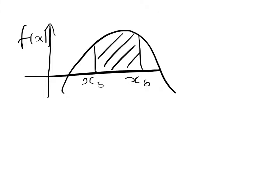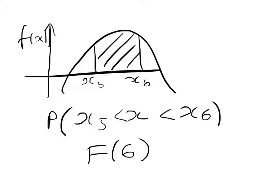So if we've worked out our F of x and we want to find the probability that x is greater than x5 but less than x6, once we've worked out the cumulative distribution function, we simply do F of 6 minus F of 5. OK, so we'll now do an example.